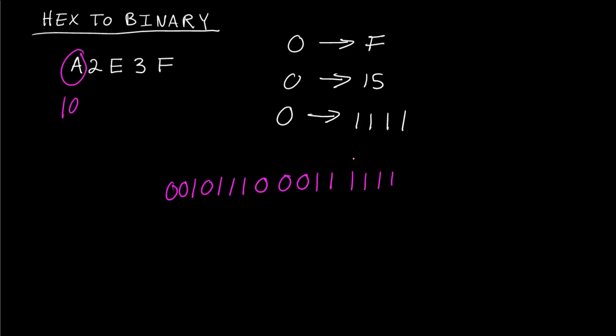A is 10, and 10 in binary is 1010. So we have this for F, we have this for 3, this is E, 2, and A.